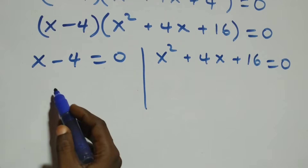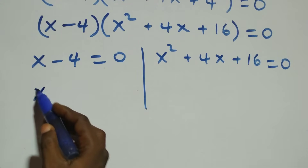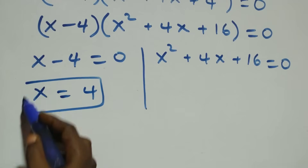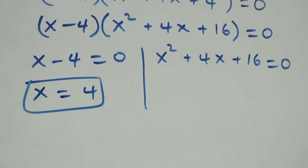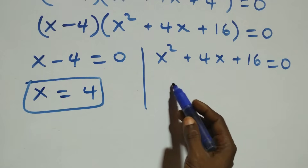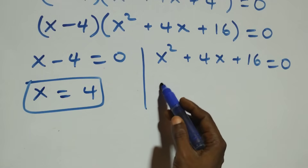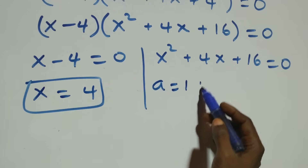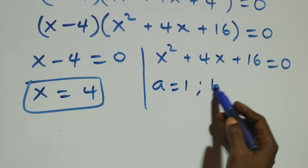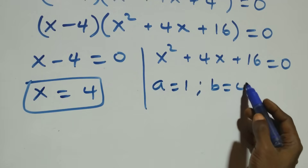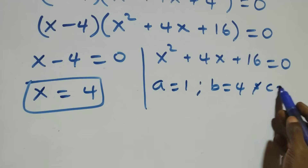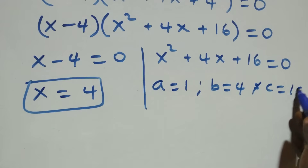Solving the first case, x minus 4 equals to 0 gives us x equals to 4, which is a real solution. For the quadratic x squared plus 4x plus 16 equals to 0, we have a quadratic equation where a equals to 1, b equals to 4.